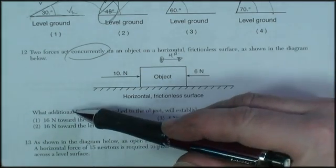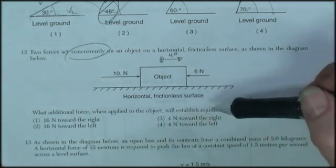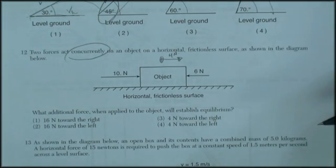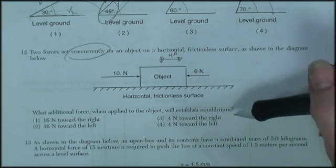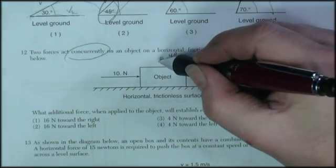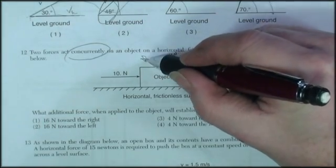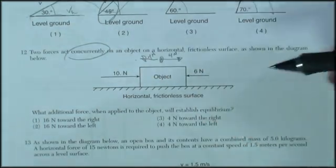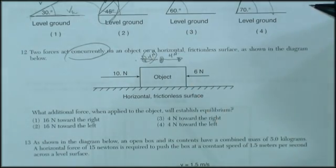Let's read the question. What additional force, when applied to the object, will establish equilibrium? Equilibrium means no acceleration or no net force. So I would need an additional 4 Newtons, and that would be westerly. So that's the answer I'm looking for.